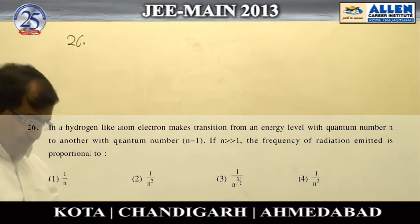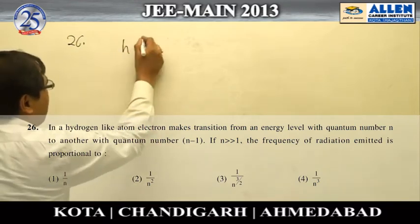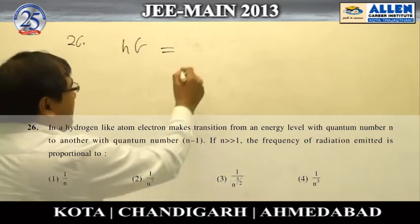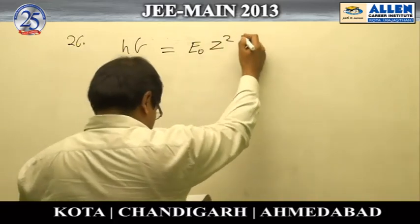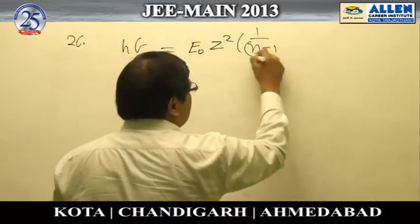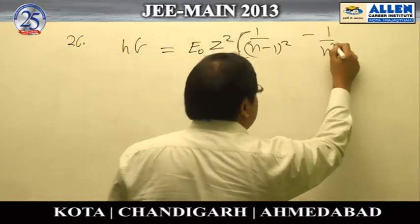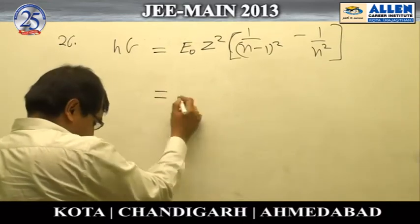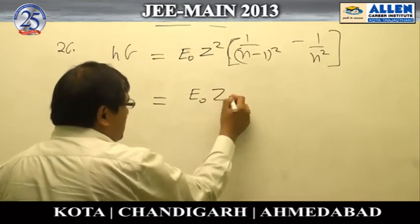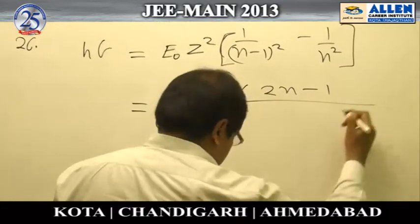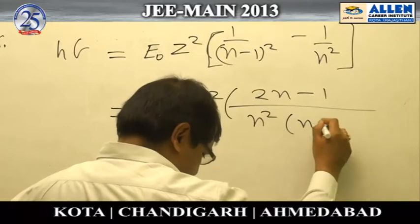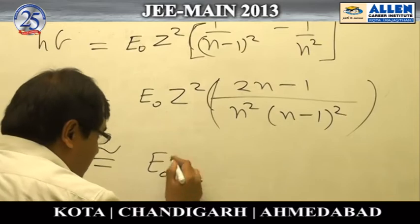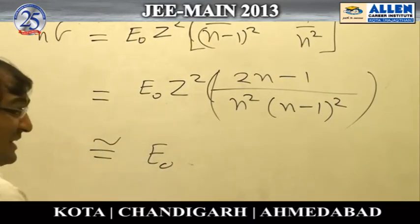Question 26: The energy liberated due to the transition will be E₀Z² times (1/(N-1)² minus 1/N²). If you simplify it, it becomes E₀Z² times (2N-1) upon N²(N-1)², which becomes approximately — because as given in the question, N is very very large —